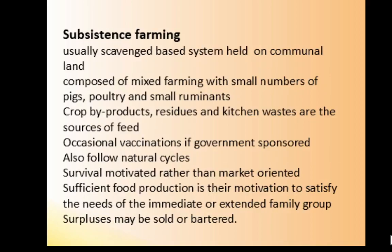Subsistence farming is usually scavenge-based, held on communal land, and composed of mixed farming with small numbers of pigs, poultry, and small ruminants. Sources of feed are crop byproducts, residues, and kitchen waste. Vaccinations are occasional if mandated or sponsored by the government. This type also follows natural cycles and focuses on survival. Sufficient food production is the motivation to satisfy an extended family group, and any surplus may be sold or traded with other families.